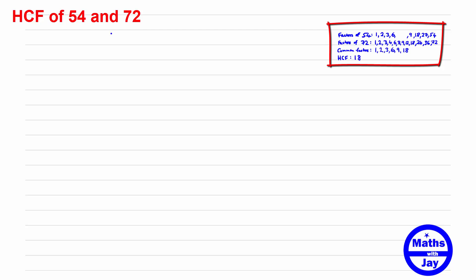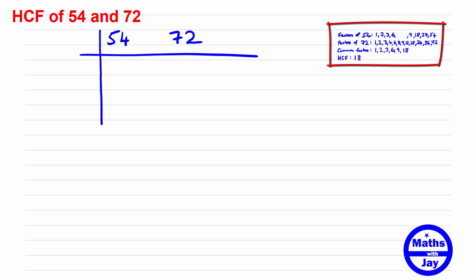All we need to do is write down a little table with the numbers we're finding the highest common factor of — you could do this with more than two numbers. We put our numbers across the top, then on the left-hand side we find numbers that divide into them. Looking at 54 and 72, we might notice that 6 goes in, so we write 6 down and divide: 6 into 54 goes 9, and 6 into 72 goes 12. Now we've got a much easier problem — we're only looking at 9 and 12. 2 doesn't go into them because 9 is odd, but 3 does.